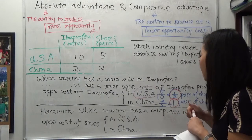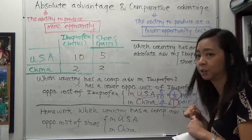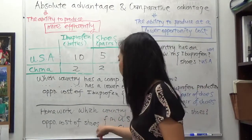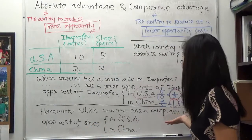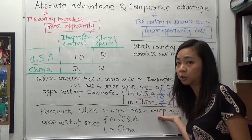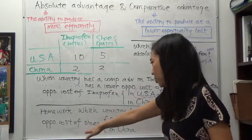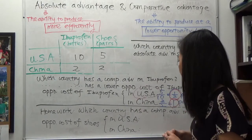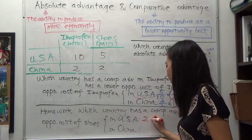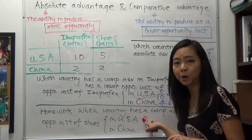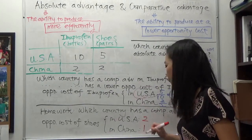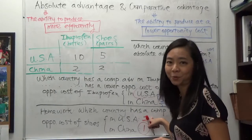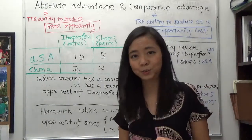What about the comparative advantage in the production of shoes? The answer is China, but please leave this as a homework exercise. To find which country has a comparative advantage in shoes, again you calculate the opportunity cost. The opportunity cost of shoes in the US is 2 bottles of ibuprofen, and in China it is 1 bottle of ibuprofen — and that is lower. Do the calculation yourself as homework. Thank you for watching and good luck with your studying.